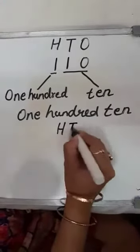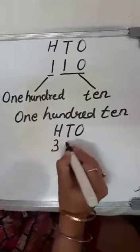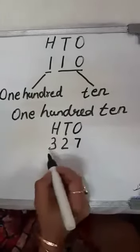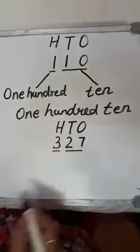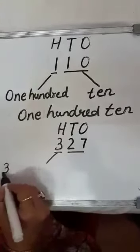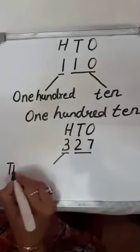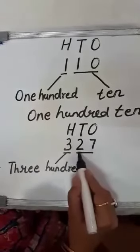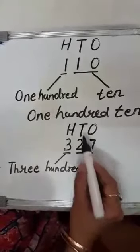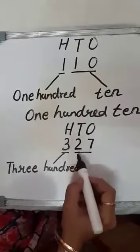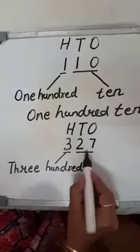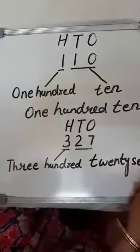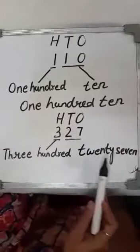Let's take one more example with the number 327. We divide it into two parts. At the 100s place it is 3, so we write three hundred. At the 10s place it is 2, which makes twenty, and at the 1s place it is 7. So the number name is three hundred and twenty-seven.